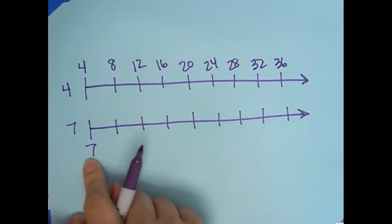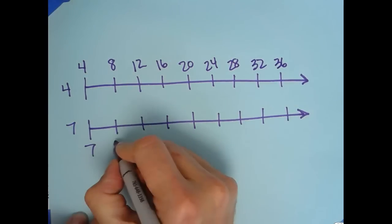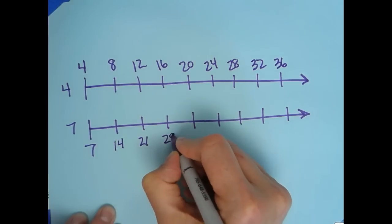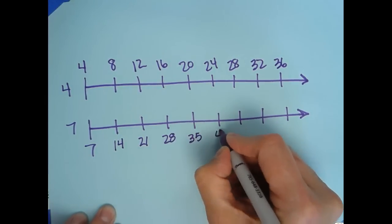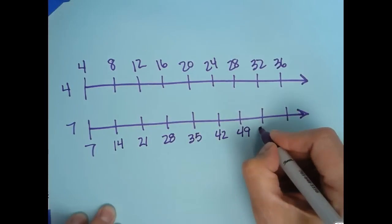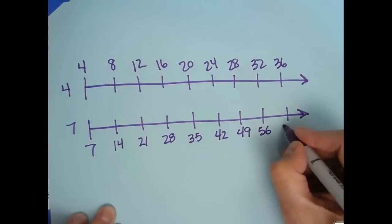Here we can count by sevens: 7, 14, 21, 28, 35, 42, 49, 56, and 63.